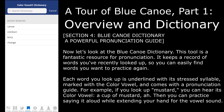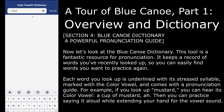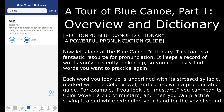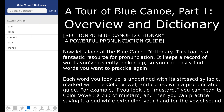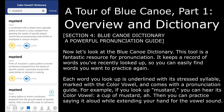Now let's look at the Blue Canoe Dictionary. This tool is a fantastic resource for pronunciation. It keeps a record of the words you've recently looked up, so you can easily find words that you want to practice again. Each word that you look up is underlined with a stressed syllable, marked with a color vowel, and comes with a pronunciation guide. For example, if you look up mustard, you can hear its color vowel — a cup of mustard — and then practice saying it out loud while extending your hand for the vowel sound.